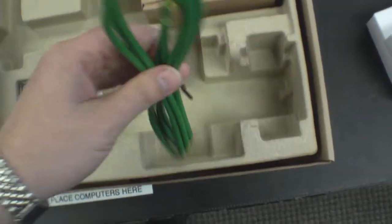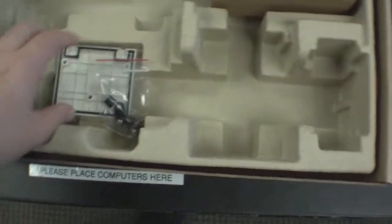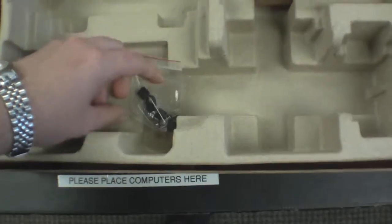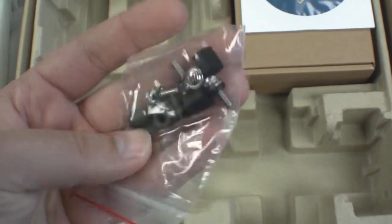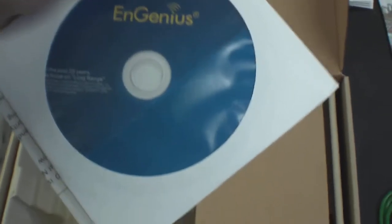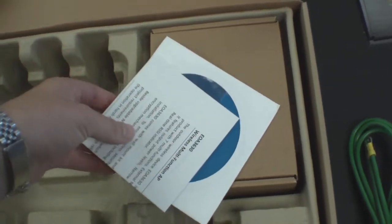Looks like a grounding strap. Pretty thick, heavy duty. That's good. Looks like a bay cover of one kind or another. Some mounting hardware, possibly for that cover there or the ground strap. Either some software, a video, or a user's manual.